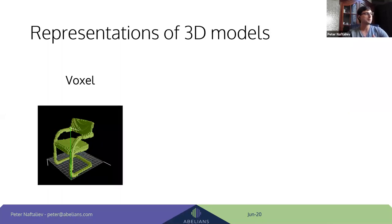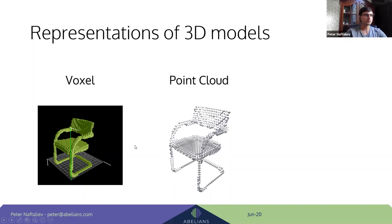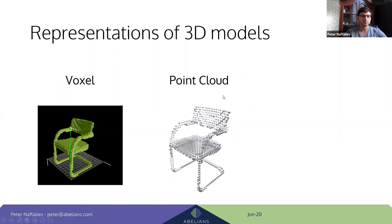A point cloud is similar to a voxel but with less data — just a select few, possibly random, points each classified as inside or outside the mass. Point clouds are important in neural networks because they allow better optimization of computation resources: we don't have to go over all points in space, just select a few, which dramatically decreases the computation power needed.